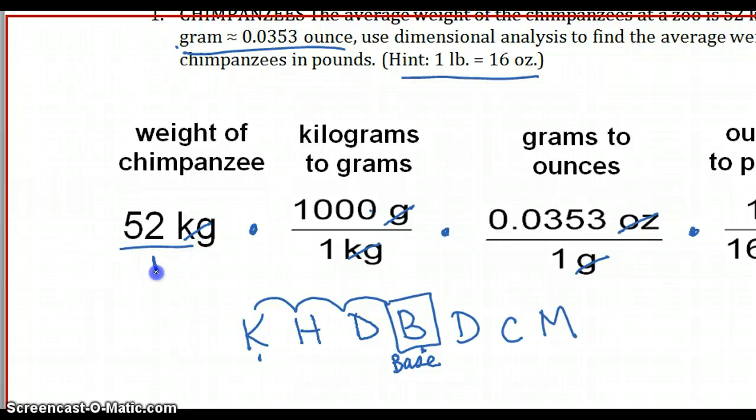Once you've canceled all your units, and you have the unit you want, now we just go through. You're going to multiply on your calculator, 52 times 1,000 times 0.0353 times 1, and all of that divided by 16. So in the end, you should end up with 114.725 pounds. So our chimp here is about 115 pounds. See how you set this up to be able to cancel your dimensions that you do not want, and end up with the unit of measure that you do want.